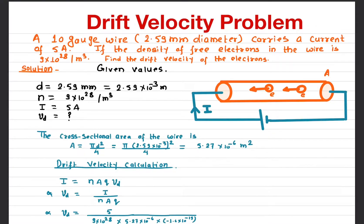In this video we'll talk about how to find the drift velocity of electrons in a wire. The given information we have is a 10 gauge wire. In electricity we measure wire in terms of the gauge, so a 10 gauge wire means it has a diameter of 2.59 millimeters.